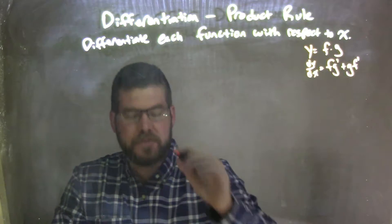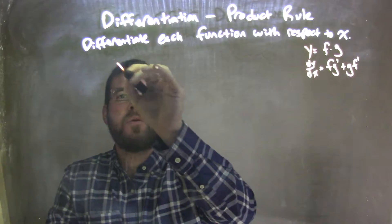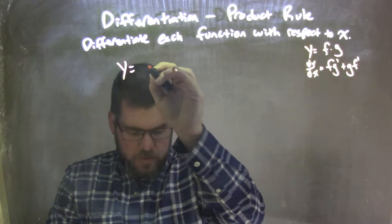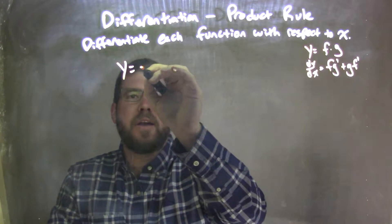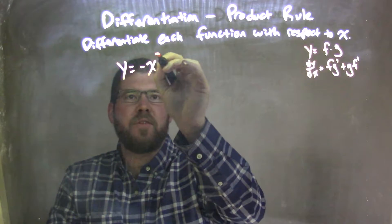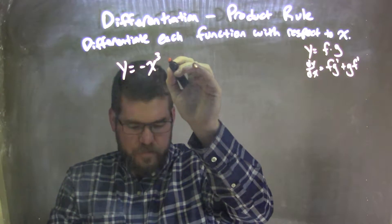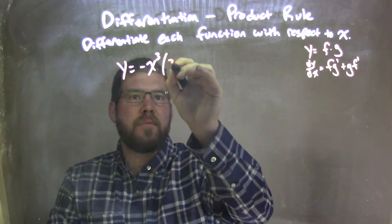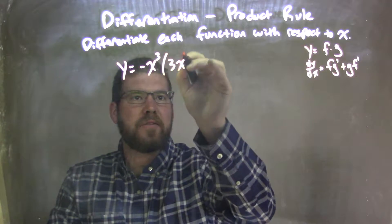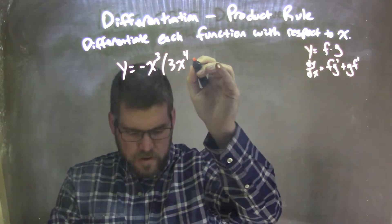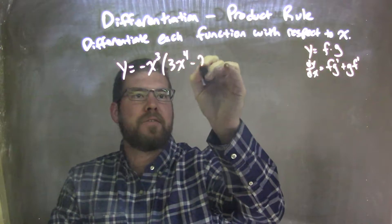So, if I was given this function: y equals negative x to the third times 3x to the fourth minus 2.